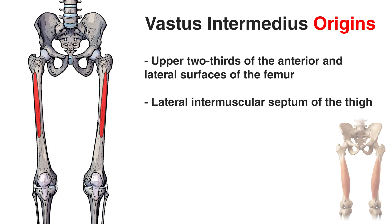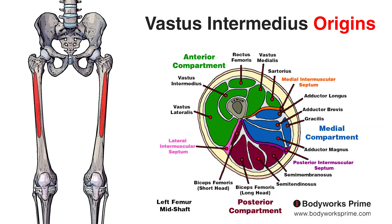The last quadriceps muscle is the vastus intermedius, and its origins are on the upper two-thirds of the anterior and lateral surfaces of the femur — the front and outside of the femur. In addition to the femur itself, it also originates from the lateral intermuscular septum of the thigh, the sheet of deep fascia that separates the anterior and posterior compartments of the thigh.